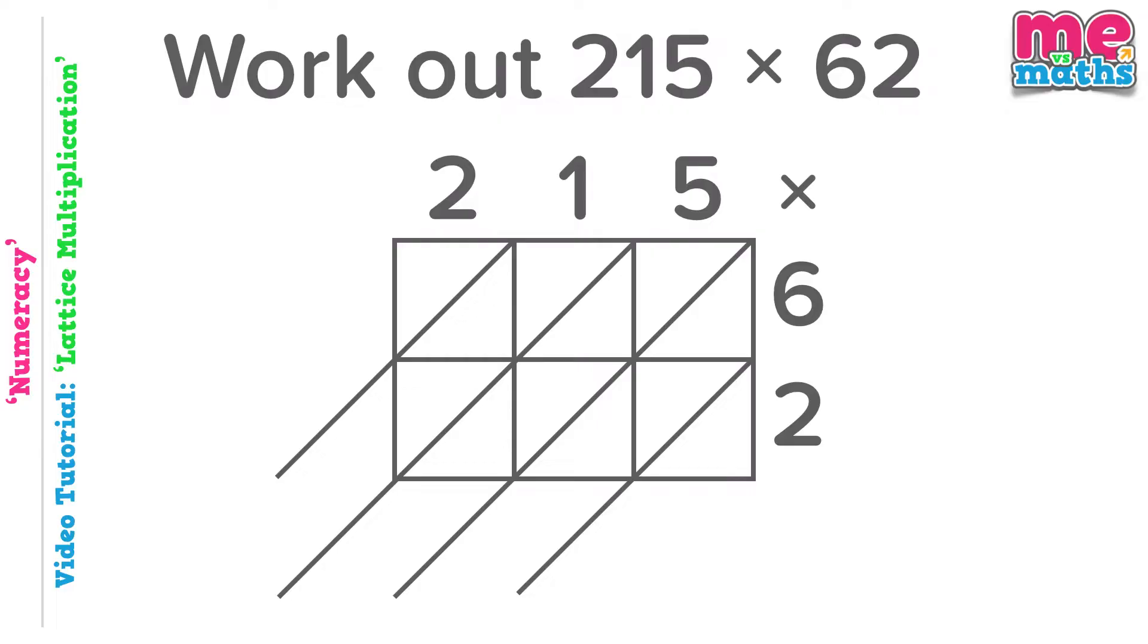Let's start our multiplication in a different place this time just to show you that it really doesn't matter what order we do this stage in. Let's start in the top left instead. 2 times 6 is 12. 1 times 6 is just 6, so no tens and 6 units. 5 times 6 is 30. Let's go to the bottom right now. 2 times 5 is 10. 1 times 2 is just 2, so no tens and 2 units. And finally 2 times 2 is 4, so 0 tens and 4 units.